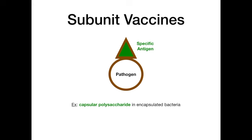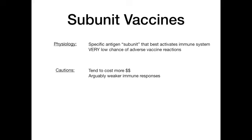A specific antigen example is the capsular polysaccharide taken from encapsulated bacteria such as Neisseria meningitidis, Strep pneumoniae, and Haemophilus influenzae type B — all encapsulated bacteria. By introducing this as a subunit in a subunit vaccine, it preferentially activates the immune system to target those encapsulated bacteria. This approach has a very low chance of adverse reactions because it's so specifically targeted. Cautions: these tend to cost more money and do induce an arguably weaker immune response.